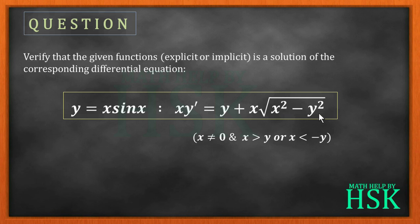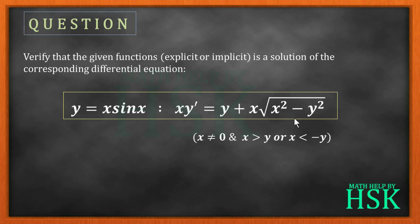The additional condition is that x cannot equal zero, and x is greater than y or x is less than minus y. This condition is required because if it is not satisfied, the term x² - y² inside the square root becomes negative, making the differential equation invalid since the square root of a negative quantity gives an imaginary result.